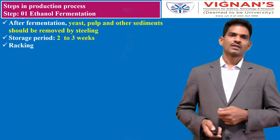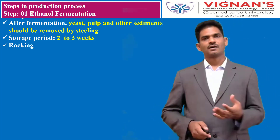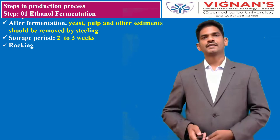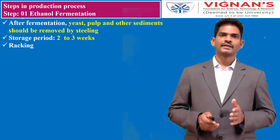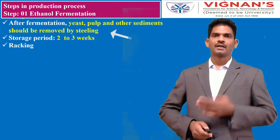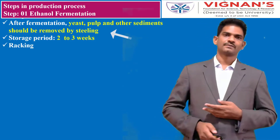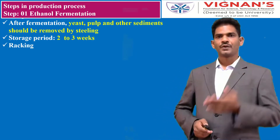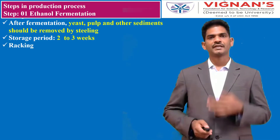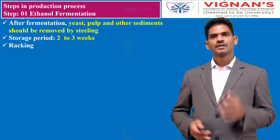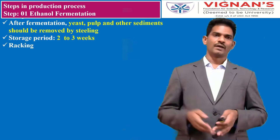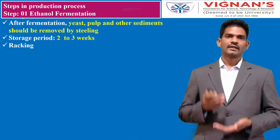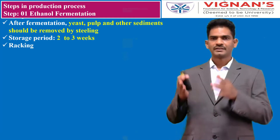Step one in the production process is ethanol fermentation, because ethanol is the primary substrate for production of acetic acid. This ethanol fermentation requires yeast. We need different materials for formulating the medium — you can use pulp and other nutritional sources — and run the fermentation process to produce ethanol. After fermentation, you have biomass and other sediments, which can be removed by settling or filtration. Storage takes two to three weeks. Racking is also a stage in ethanol fermentation; it is generally a clarification process.